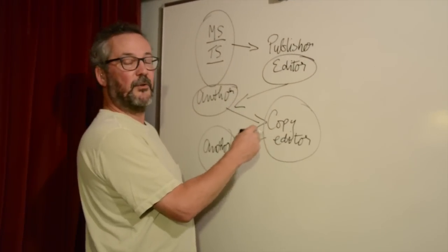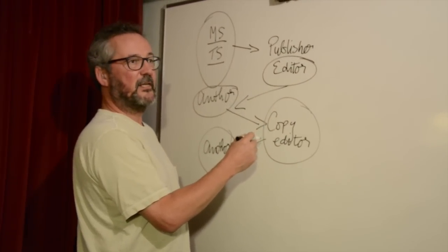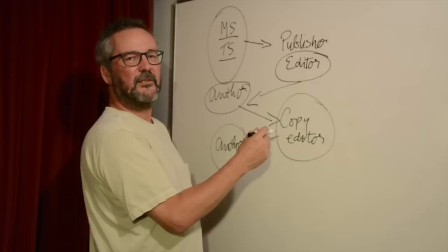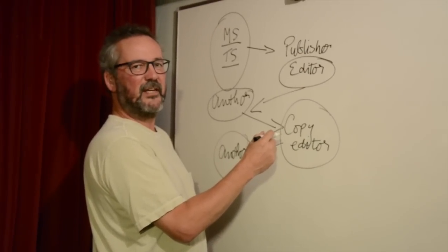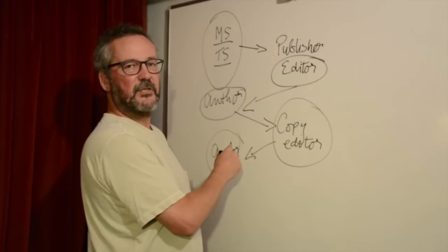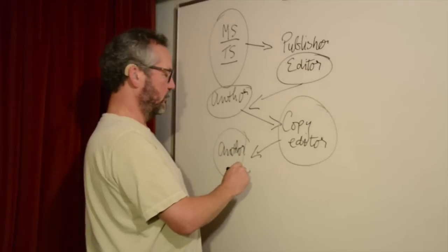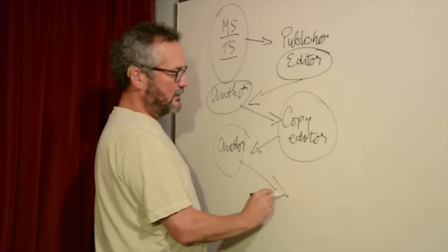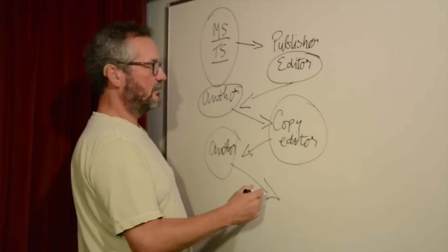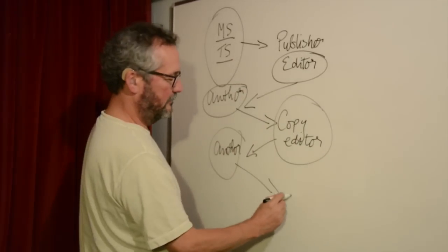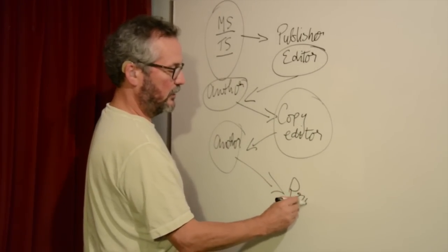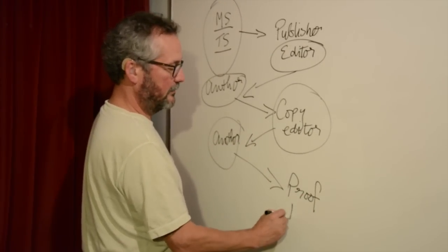The author has to go through and correct what the copy editor's done. When the copy editor says they didn't know about lions back in 1356, the author's the one who's done the research and says, oh yes they did, and here's the proof. So then it goes back to the publisher again.